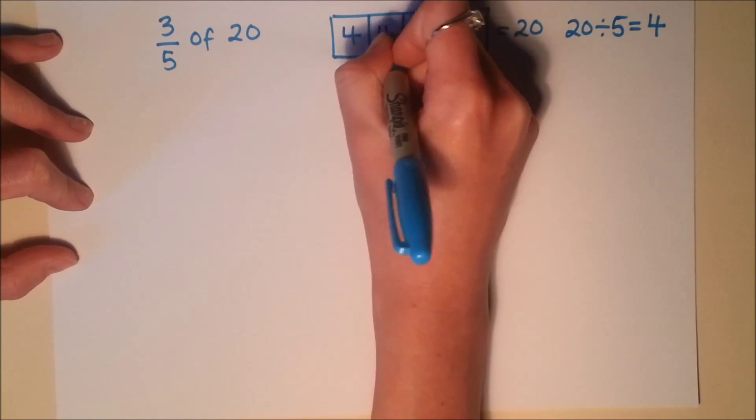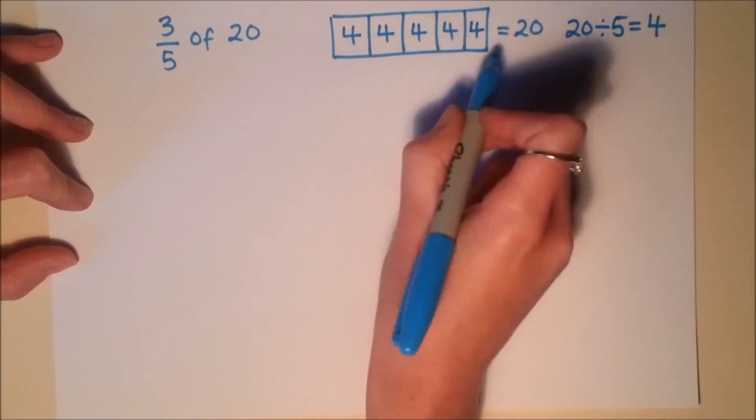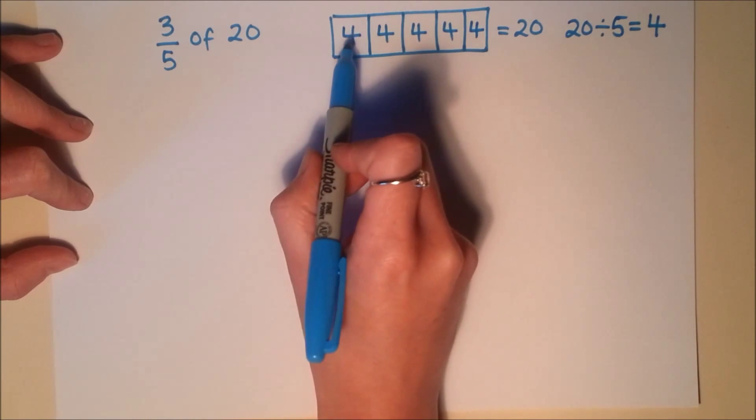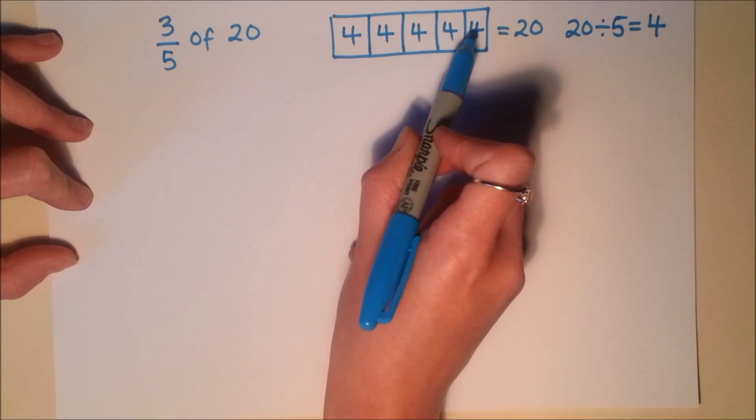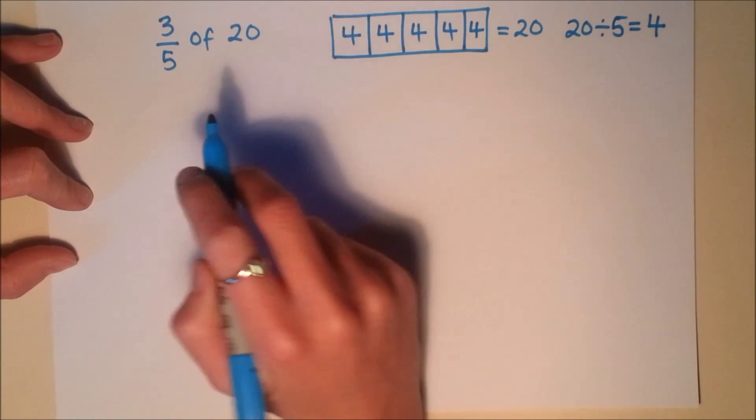Each one of these little bits is worth 4. So you can see here 4, 8, 12, 16, 20. There are 5 fours to make that full amount.